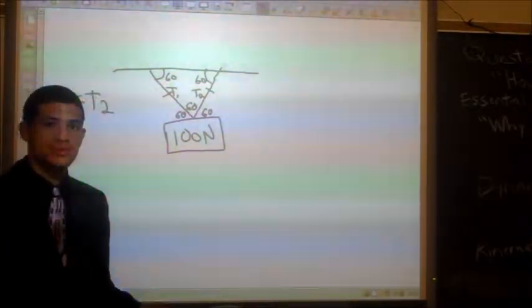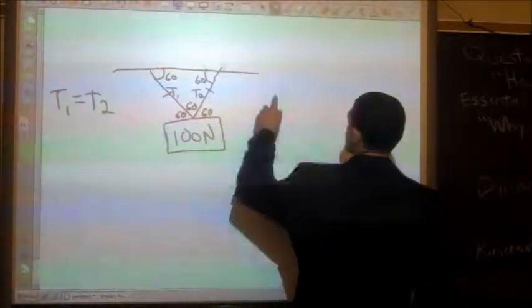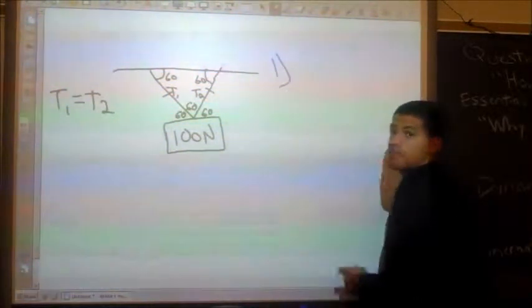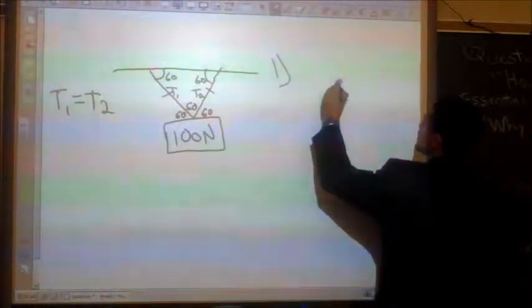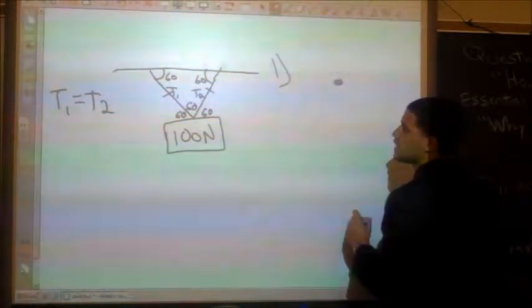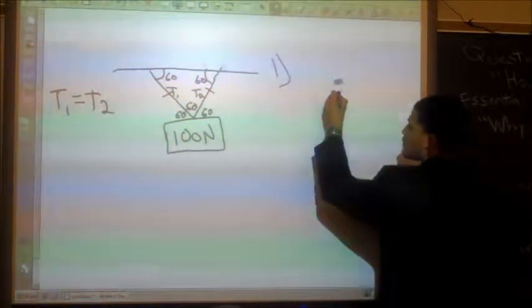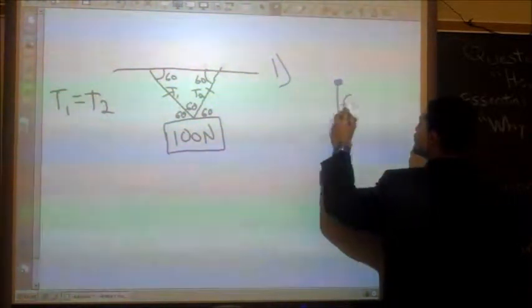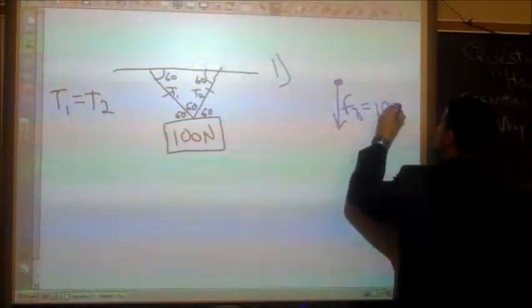Okay, so let's move on to our problem. The first step is to draw a free body diagram. So in this case, here's our mass, and we have 100 newtons, the force due to gravity. We have 100 newtons down.